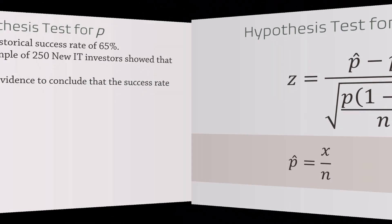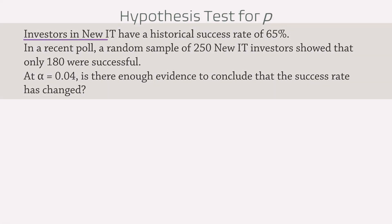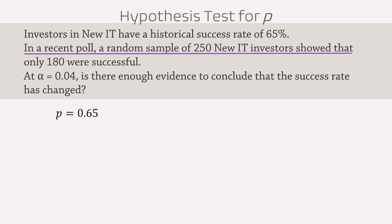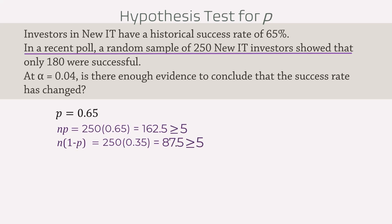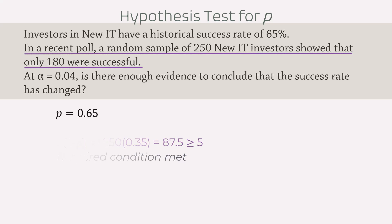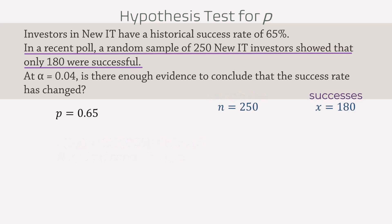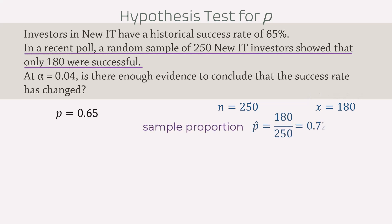In our example, investors in new IT have a historical success rate of 65%. In essence, we have a population proportion p of 0.65. In a recent poll, a random sample of 250 investors showed that only 180 were successful. That means we have a sample size n of 250 and the number of successes x of 180. The sample proportion p-hat will thus be 180 over 250, which gives 0.72.